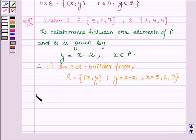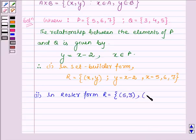And in the roster form, R is a set having elements of all the ordered pairs (5,3), (6,4) and (7,5).